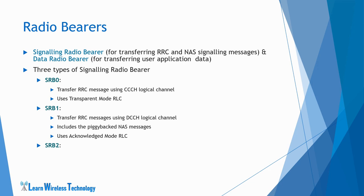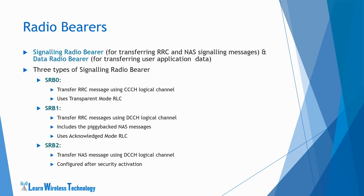Finally, SRB2 is also used to transfer NAS messages using the DCCH logical channel and is used for dedicated transfer of NAS messages. The NAS messages transferred using SRB2 can also be encapsulated within an RRC message but will not include any RRC protocol control information. SRB2 has lower priority than SRB1 and is always configured by the network after security activation. The PDCP performs ciphering and integrity protection for messages on SRB1 and SRB2. SRB2 uses acknowledged mode RLC.